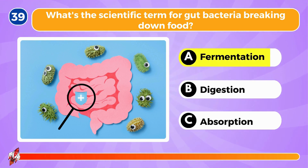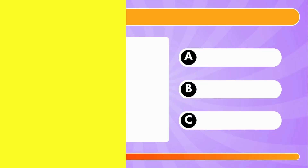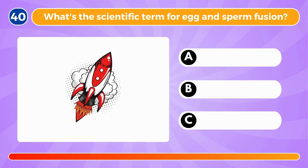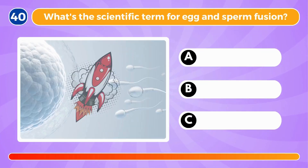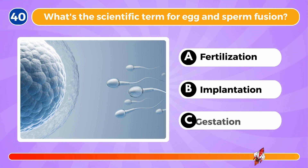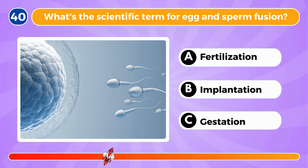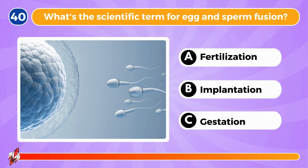What's the scientific term for gut bacteria breaking down food? The term is called fermentation. What's the scientific term for egg and sperm fusion? It's called fertilization.